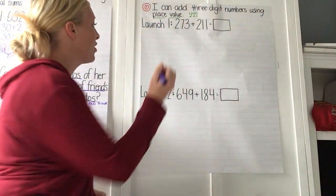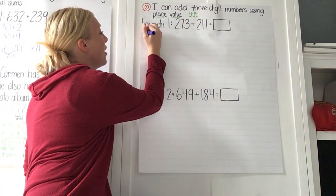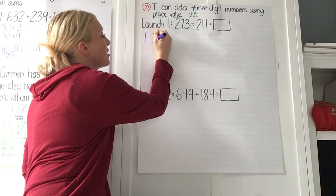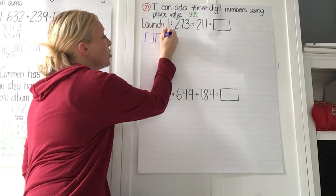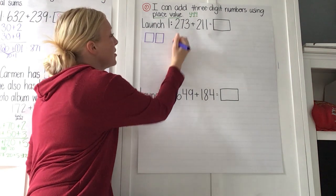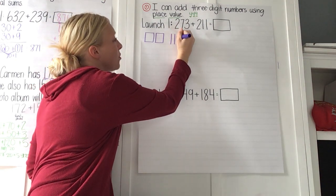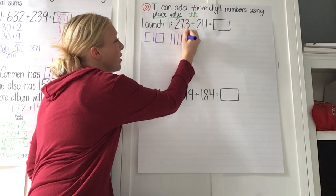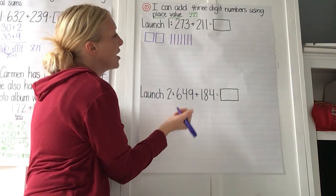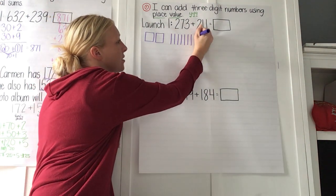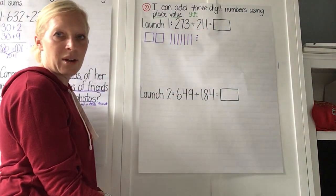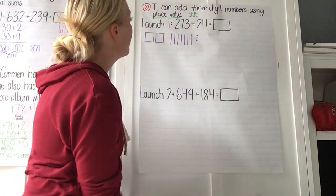So I have a friend who drew out and used those base 10 models. You showed 273 — 2 hundreds, 7 tens, and 3 ones. And then what did you do? You added 2 hundreds for the next number, 1 ten, and 1 one.